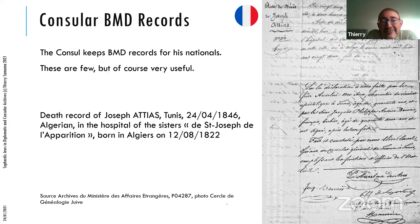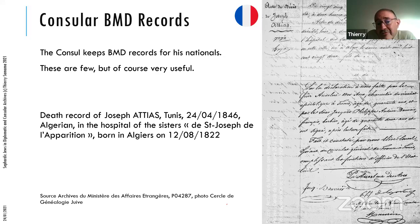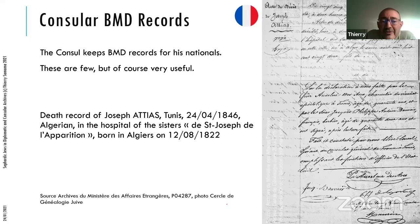BMD records — births, marriages, and deaths — are obviously the most popular raw material for genealogy, and the consul keeps BMD records for his nationals. There are not many consular BMD records because in general the foreign minority is a small minority in a given country. But when you find some relevant to your research, they can be very useful. For example, this is the death record of Joseph Vathias, who was Algerian and died in April 1846 in a hospital in Tunis.